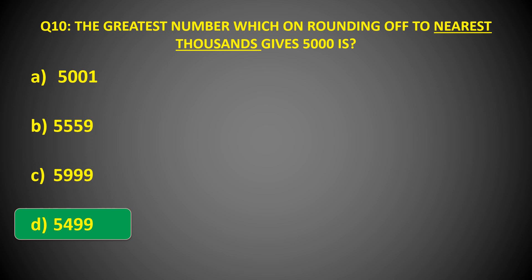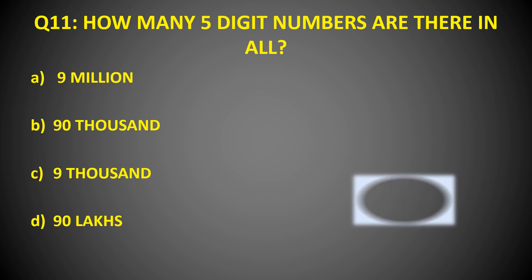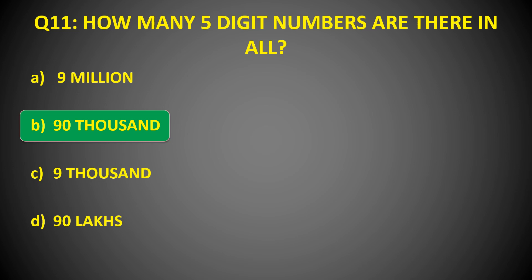Here goes our last question and it's going to be a bit tough. Let's check out: How many five-digit numbers are there in all? You will get 20 seconds for this. And the correct answer is Option B: 90,000.